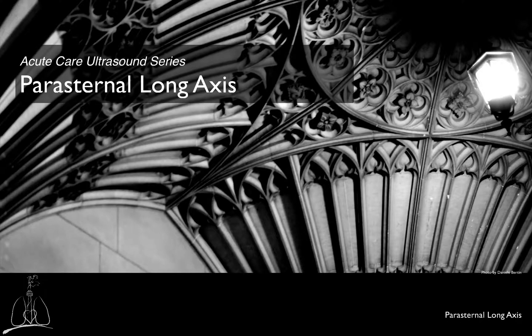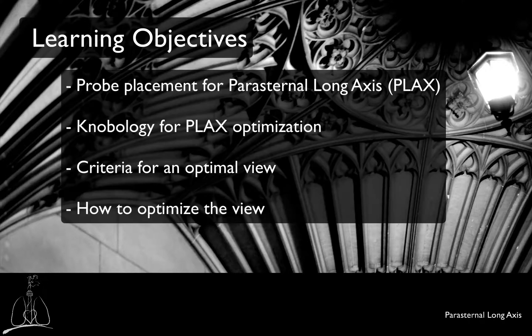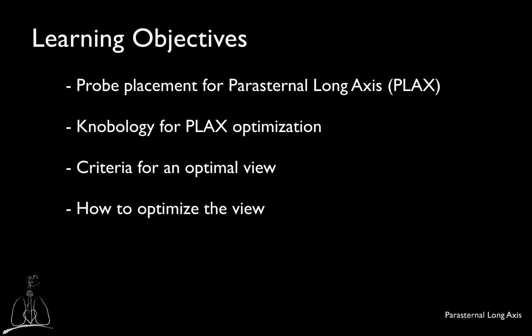The purpose of these videos is to standardize the performance of transthoracic echocardiographic studies and to help the learner optimize and troubleshoot image acquisition. This video will demonstrate how to obtain a parasternal long axis view. We will not perform any measurements at this time or use color Doppler. The second part of the video will provide tips on how to optimize the view.